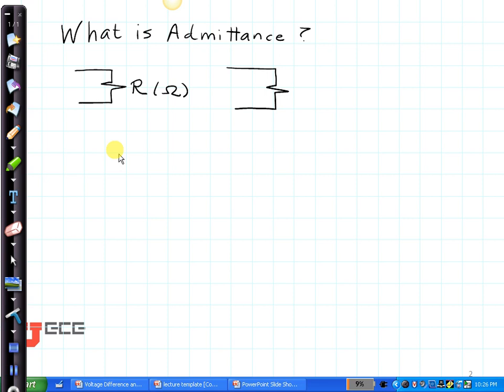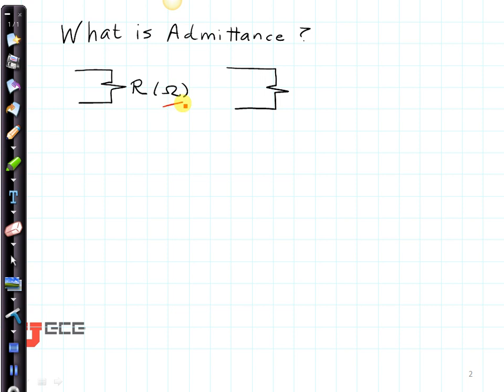Now let's talk about admittance and how to use it in current dividers. Remember that resistance is a value that's given in ohms. Its inverse, one over R, is called admittance. We usually use G to represent that, and it's given in inverse ohms, or ohms to the minus one, or one over ohms. Sometimes we call that mhos - you can see how it's ohms backwards. So admittance is one over the resistance.